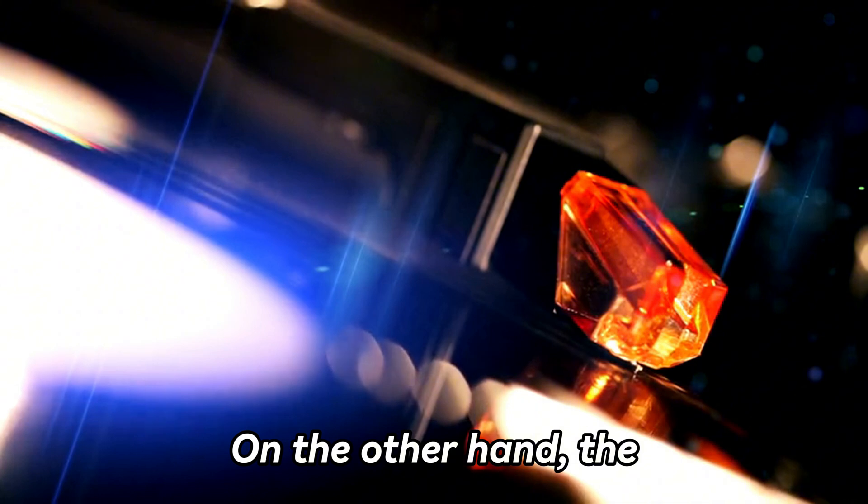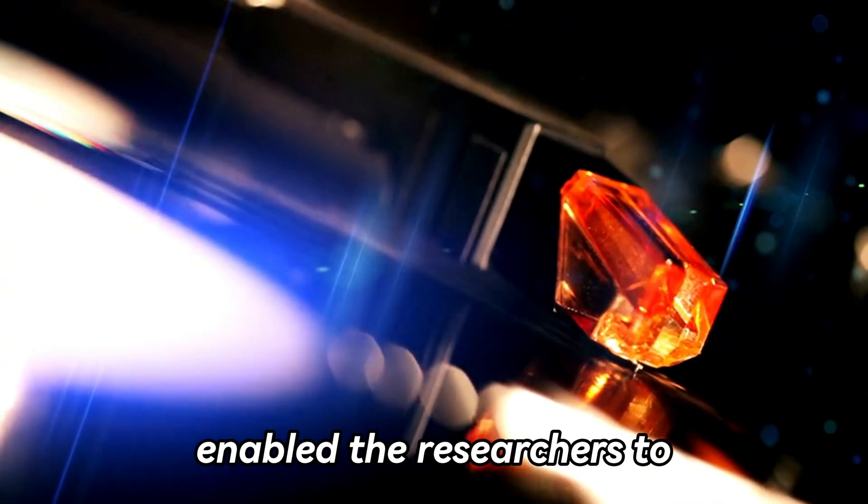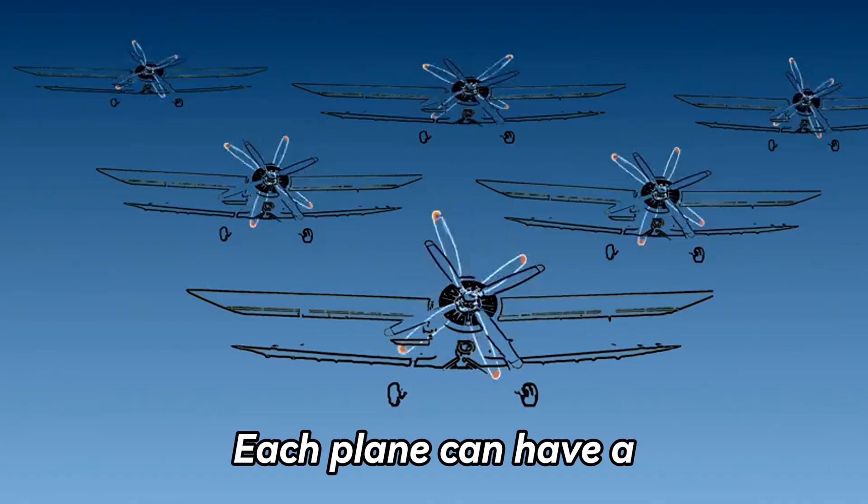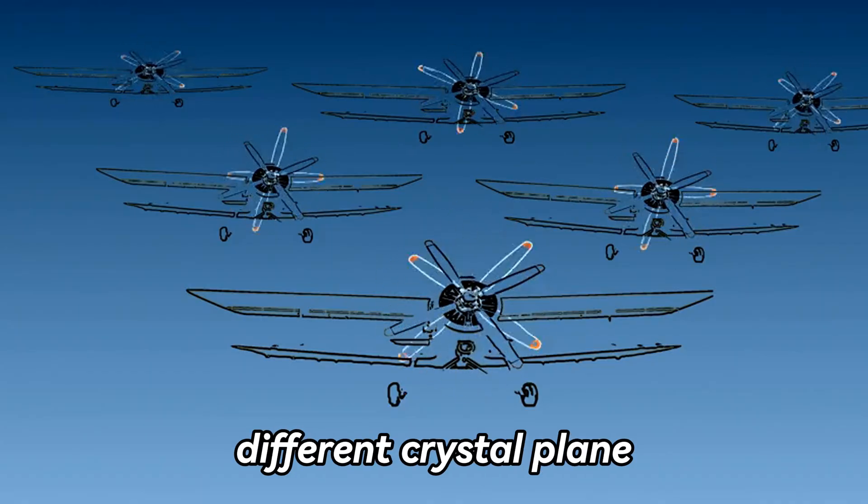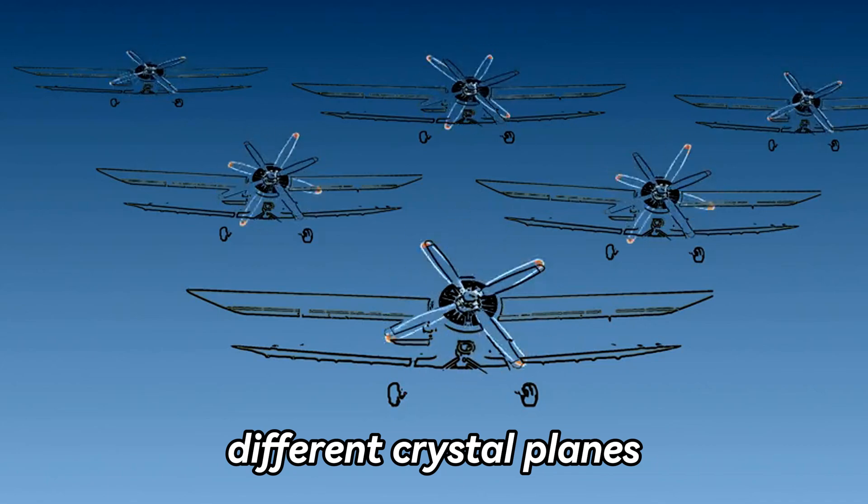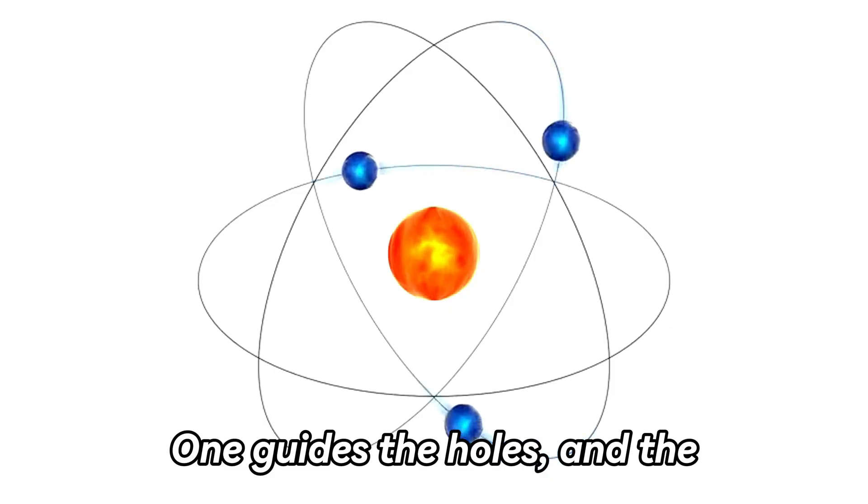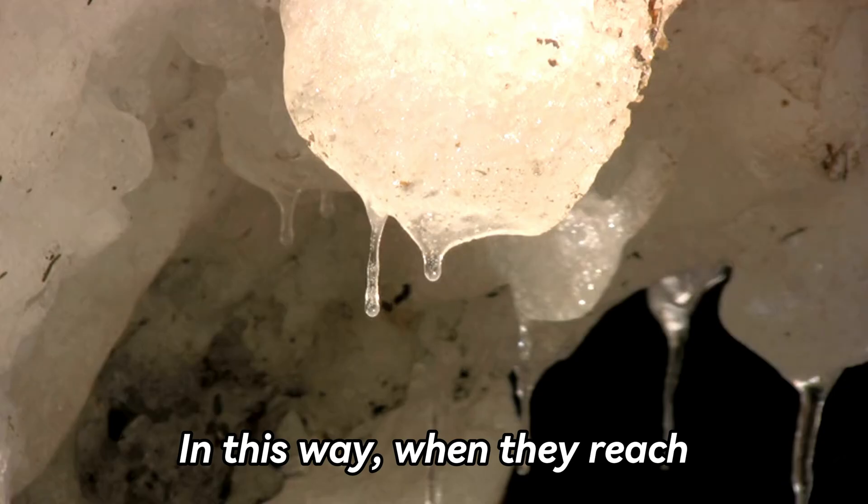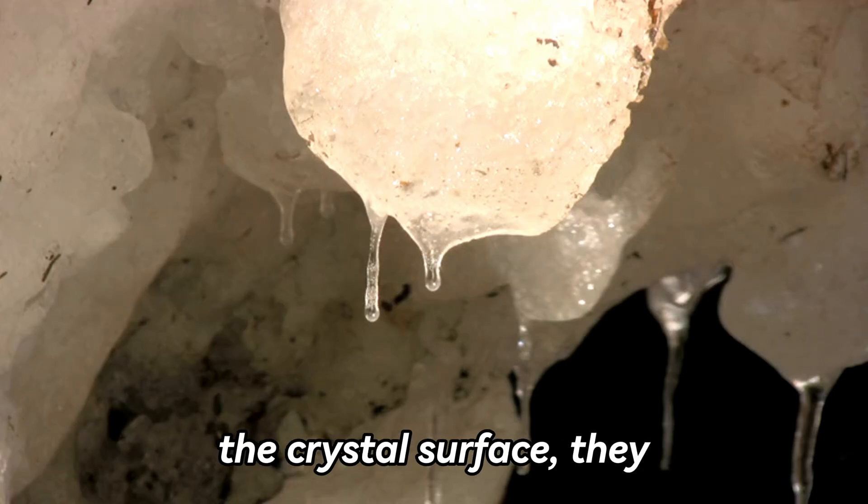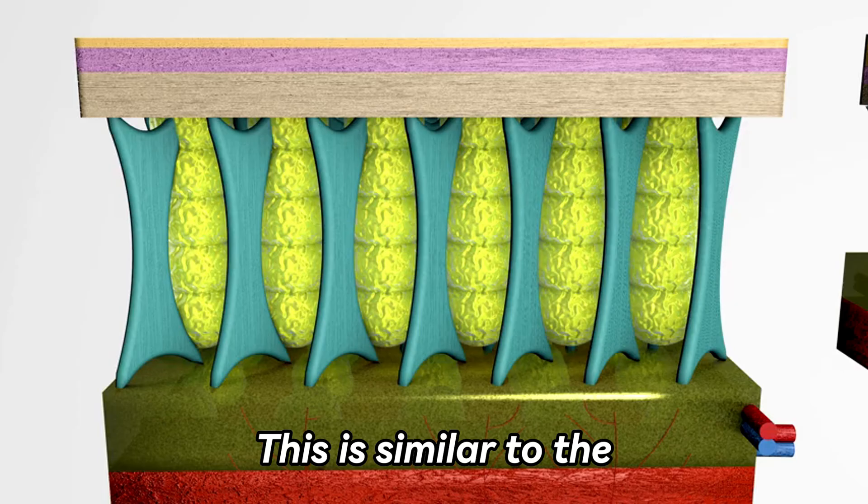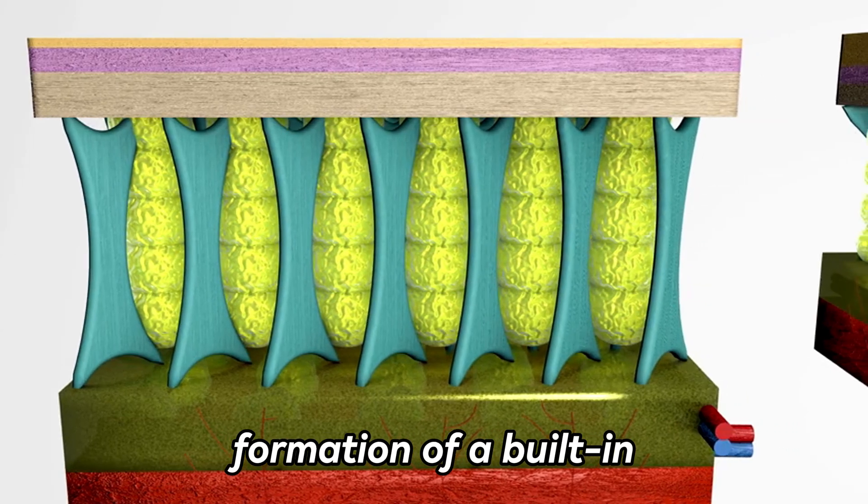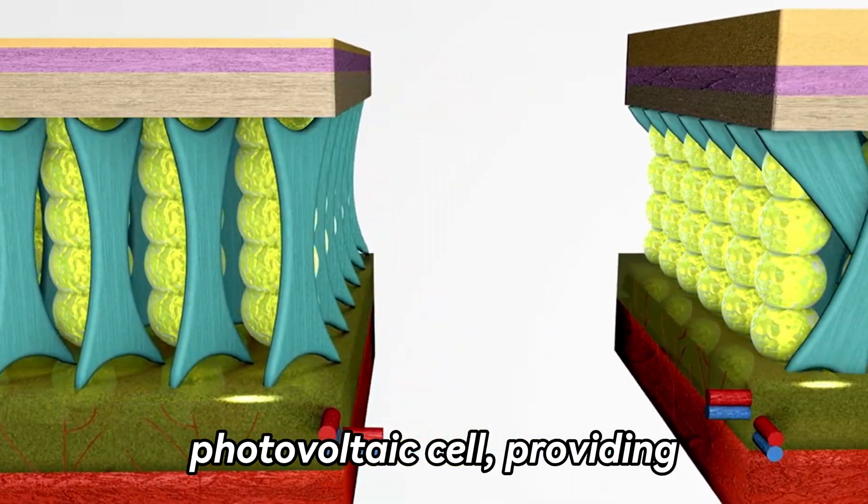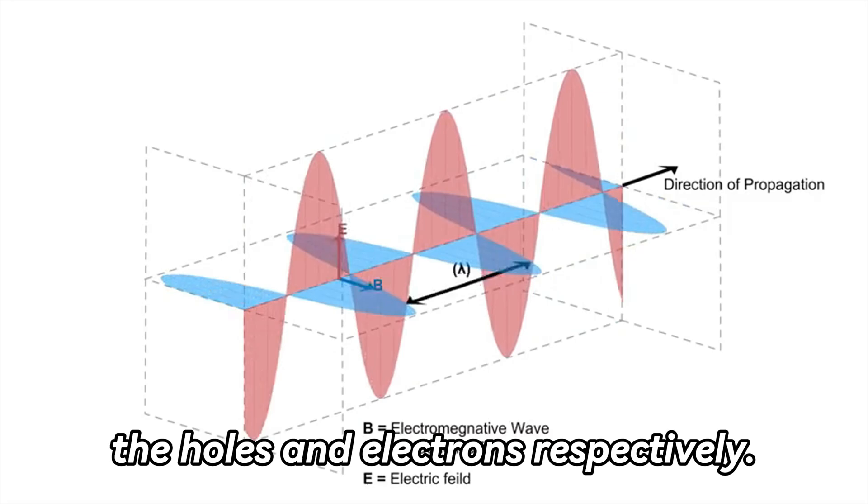On the other hand, the doping of scandium has enabled the researchers to achieve selective exposure of crystal planes. Each plane can have a different crystal plane configuration, and different crystal planes will guide different carriers. One guides the holes, and the other guides the electrons. In this way, when they reach the crystal surface, they are already separated. This is similar to the formation of a built-in electric field in a photovoltaic cell, providing dedicated conduction paths for the holes and electrons, respectively.